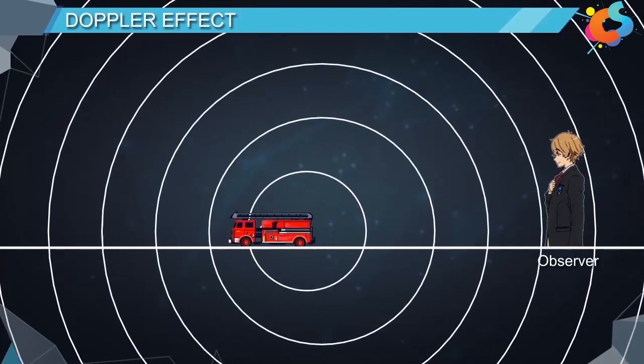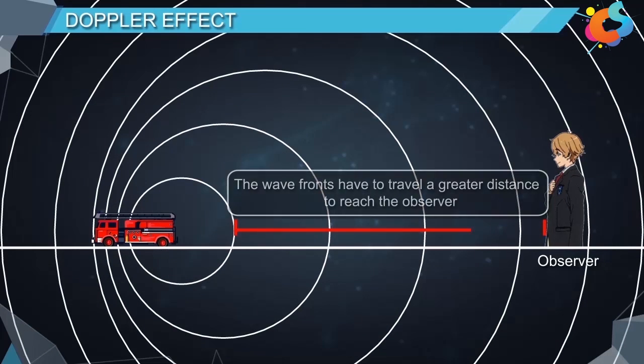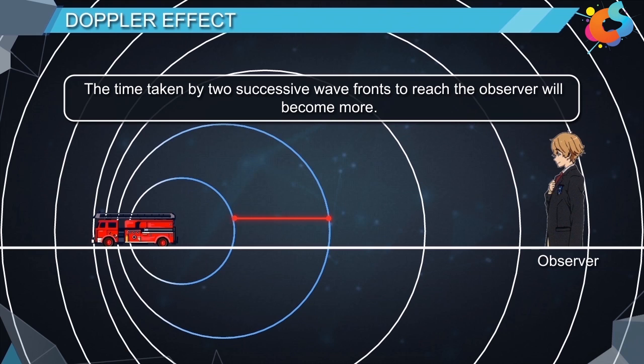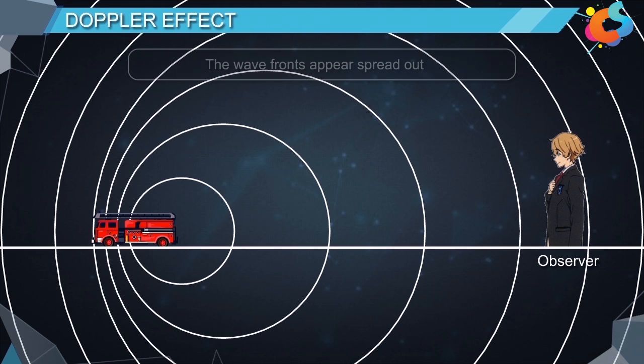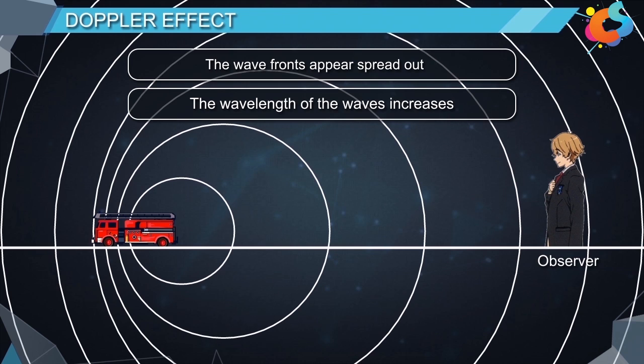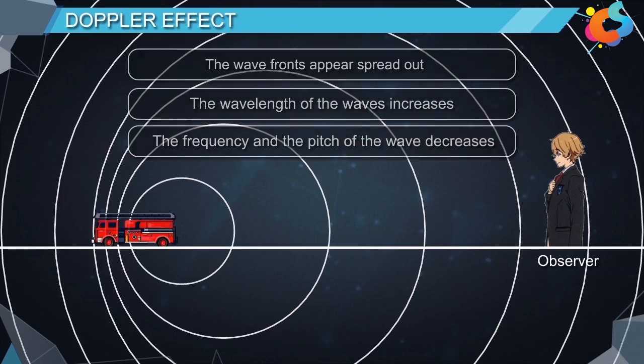Now if the source emitting the waves is moving away from the observer, the wave fronts have to travel a greater distance to reach the observer. Therefore the time taken by two successive wave fronts to reach the observer will become more. The wave fronts appear spread out. Due to this the wavelength of the waves increases, the frequency and the pitch of the wave decreases.